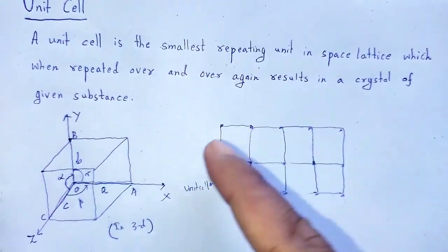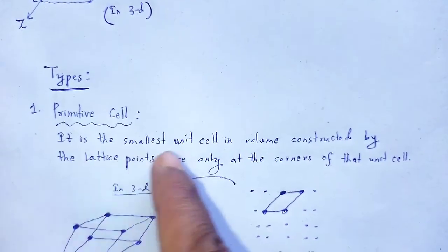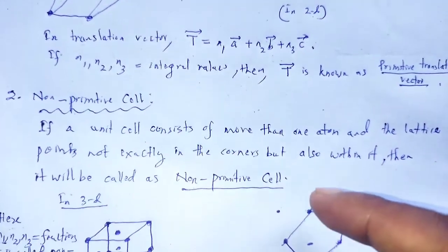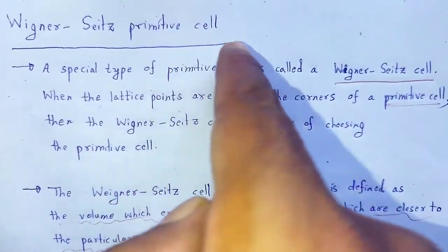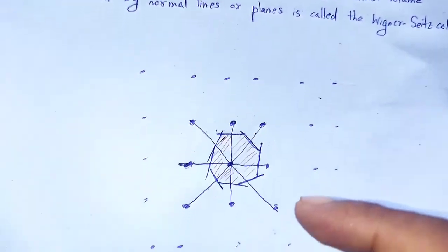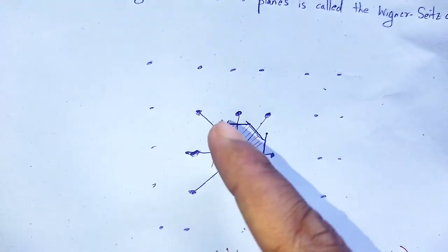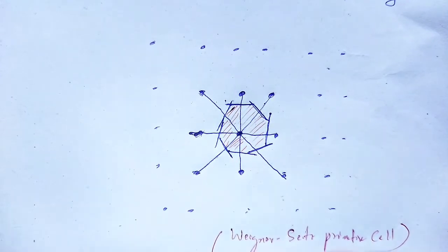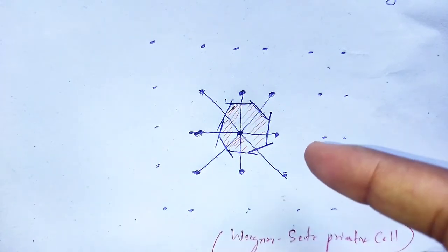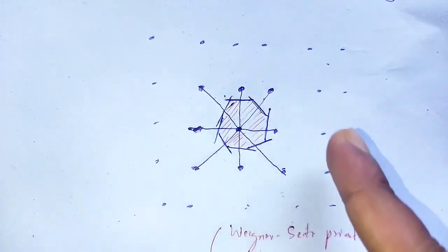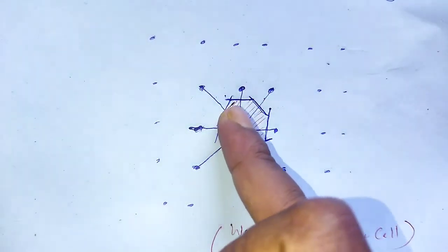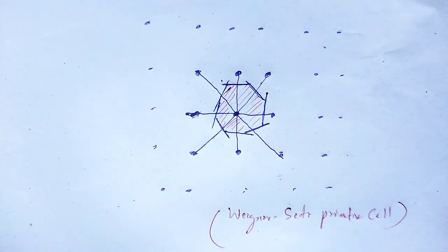So with the help of this video lecture, we understand the concept of unit cell types: the primitive cell, the non-primitive cell, and the special kind of primitive cell — the Wigner-Seitz primitive cell. We also drew the Wigner-Seitz primitive cell using lattice points in two dimensions, where the smallest area is obtained. In three dimensions, that would be the smallest volume. With these useful and informative notes, let me wind up this session. Thank you.